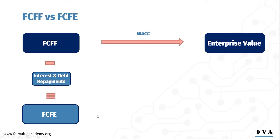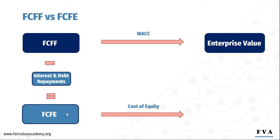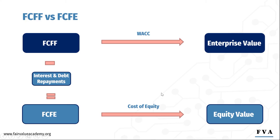When we forecast free cash flows to equity into perpetuity, we then need to discount this by the cost of equity. The present value of free cash flow to equity discounted by the cost of equity is known as equity value, also known as market capitalization or market cap. As explained in the previous session, the difference between enterprise value and equity value is net debt.